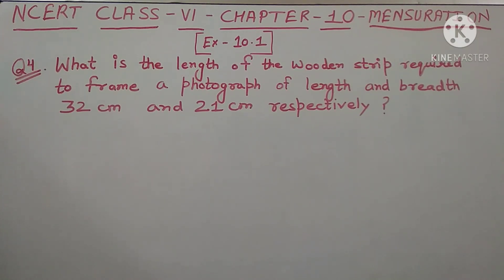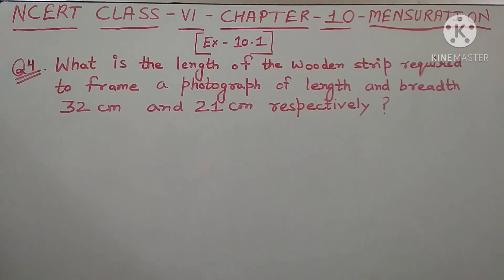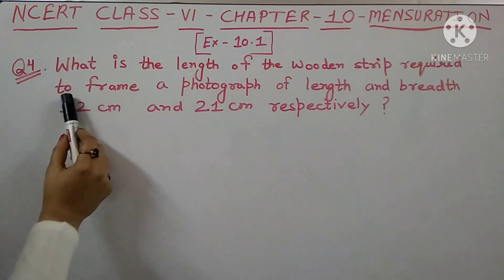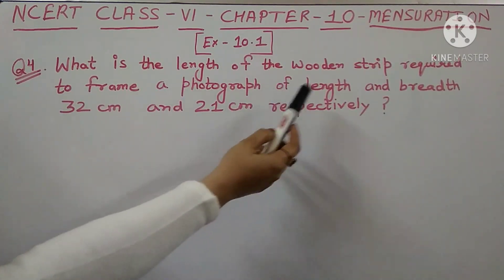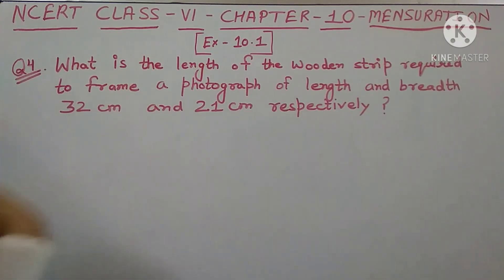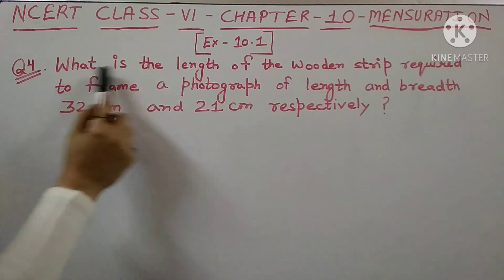Hello students, welcome to Real Learning World. Now I'm going to start question number 4, exercise 10.1, chapter 10, mensuration, class 6. The question is: what is the length of the wooden strip required to frame a photograph of length and breadth 32 cm and 21 cm respectively?